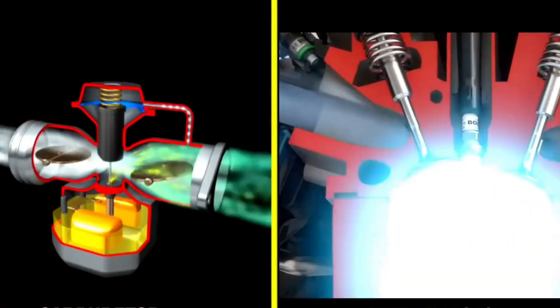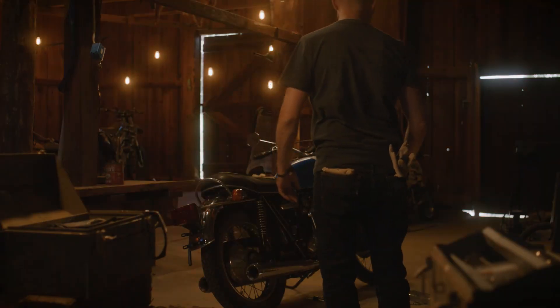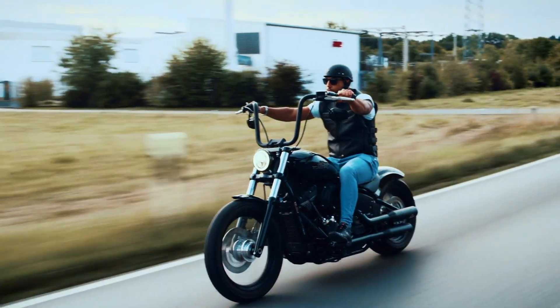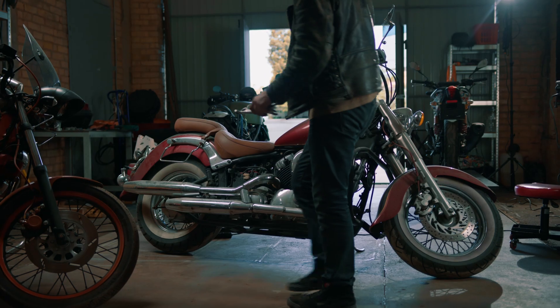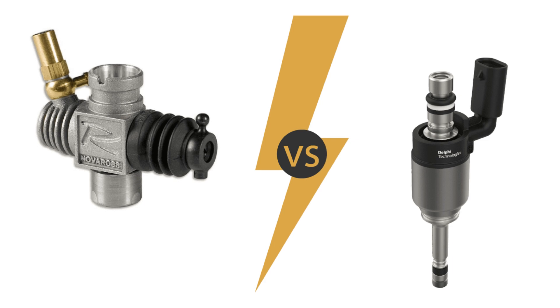The way your motorcycle mixes fuel and air could be the reason your bike runs like a dream or constantly lets you down. And here's the kicker: the difference between the two main systems is way bigger than you probably expect. We're talking about carburetors versus fuel injection, old school versus modern tech.